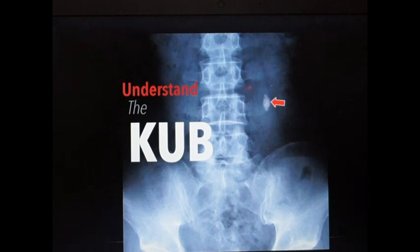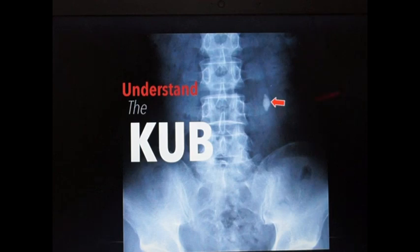This x-ray is called a KUB x-ray — Kidney, Ureter, Bladder — to view any stones in the kidney, ureter, and bladder. In a normal x-ray, these three structures, being soft organs, won't be visible. Only if there is any calcification like renal stones can we view them in this kind of x-ray. Here the man was diagnosed as having renal stones.